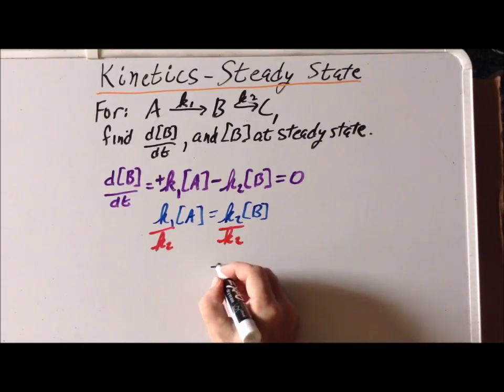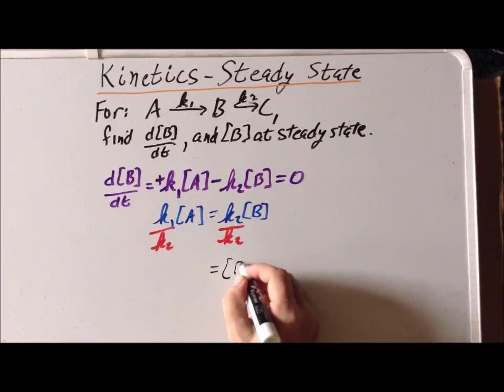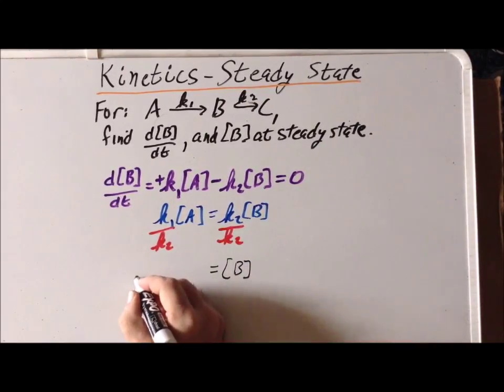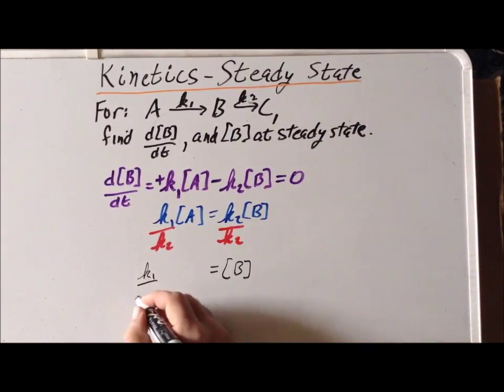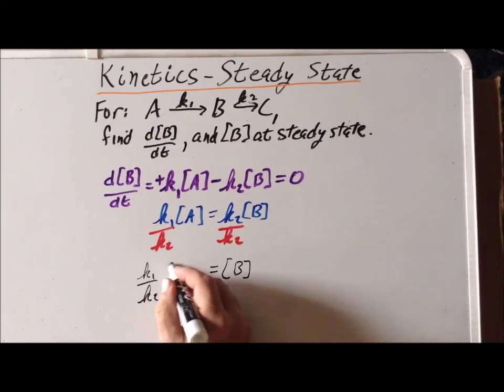And the concentration of B at the steady state is equal to K1 divided by K2 times the concentration of A.